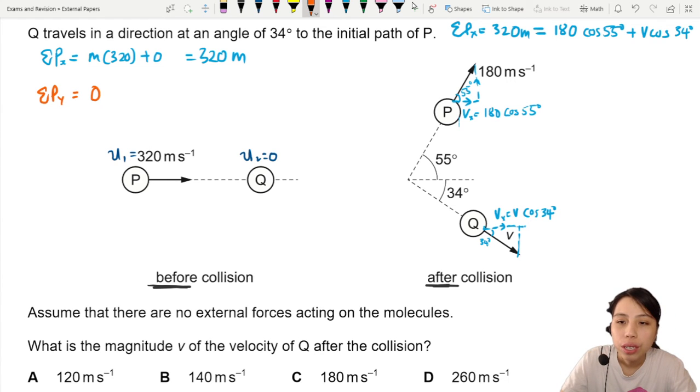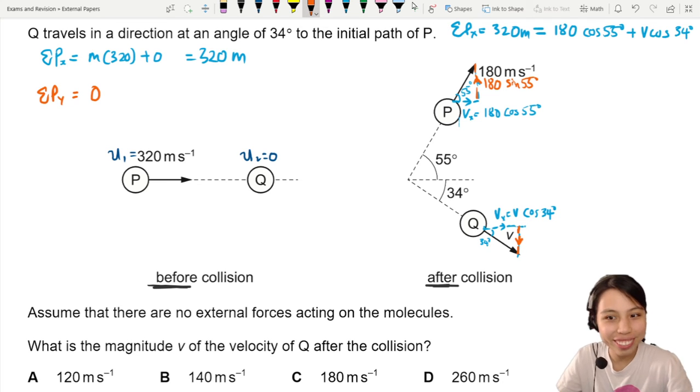Let's do the vertical. So for first one, P has an upwards vertical component. This will be 180 for velocity, sine 55. For the other ball going downwards, they are in opposite directions. This one is V sin 34.